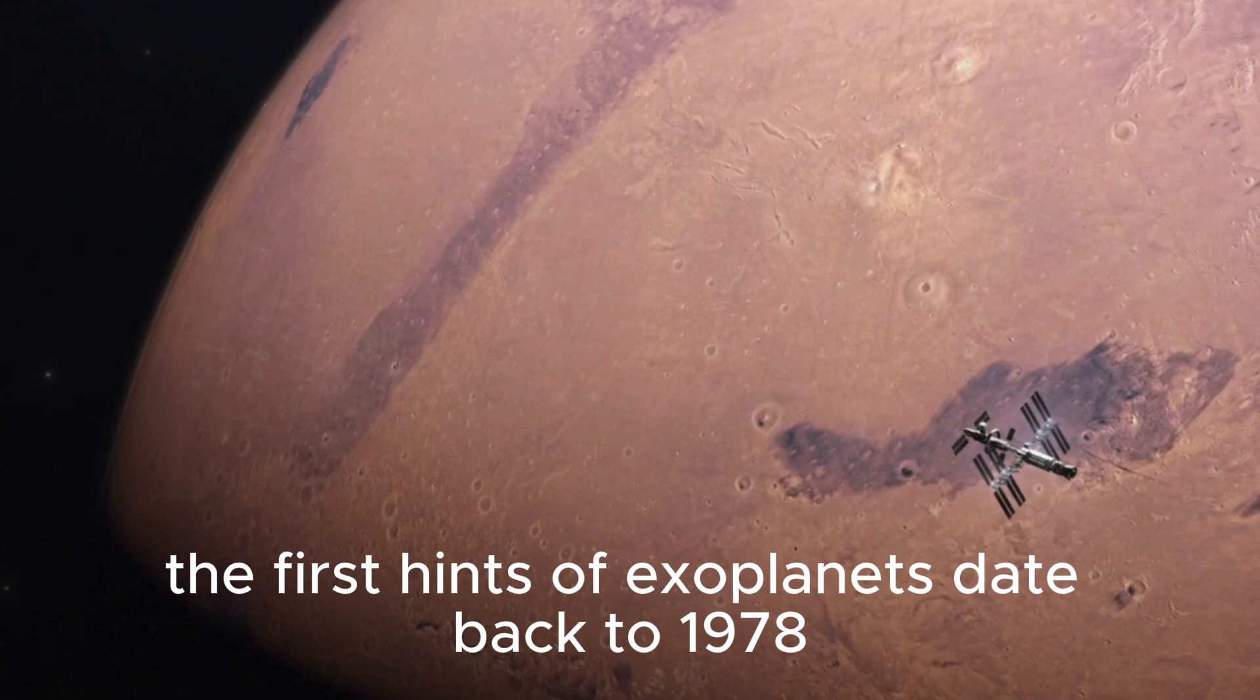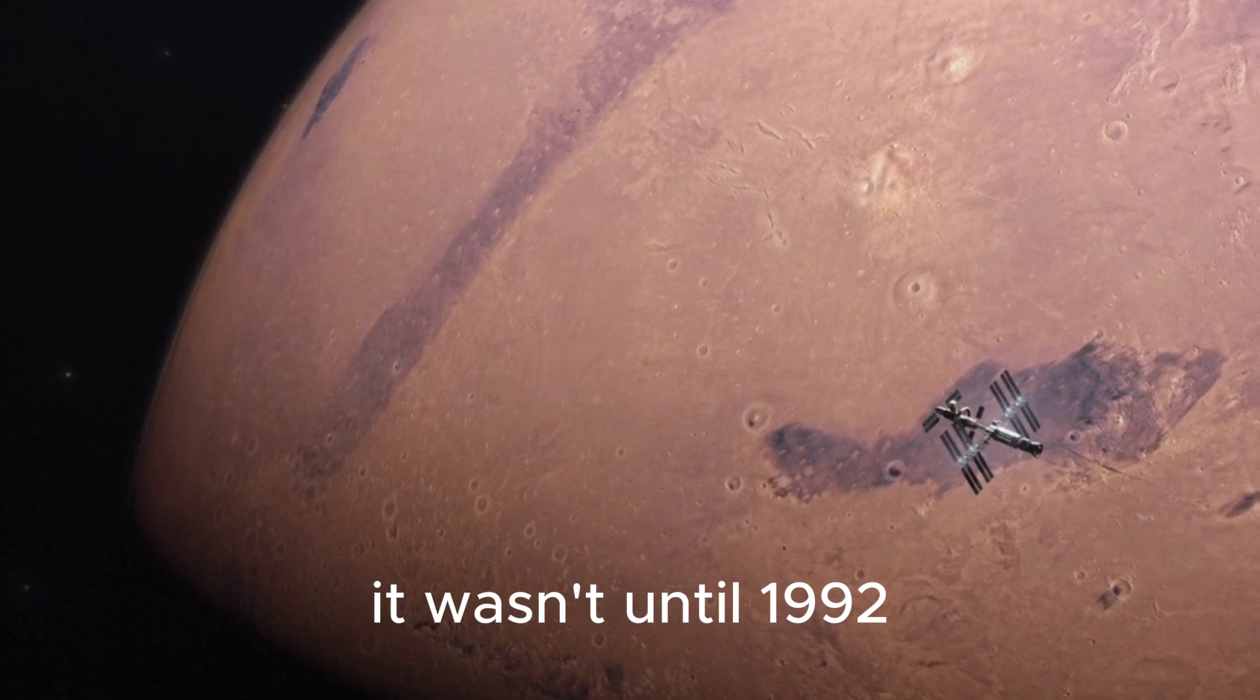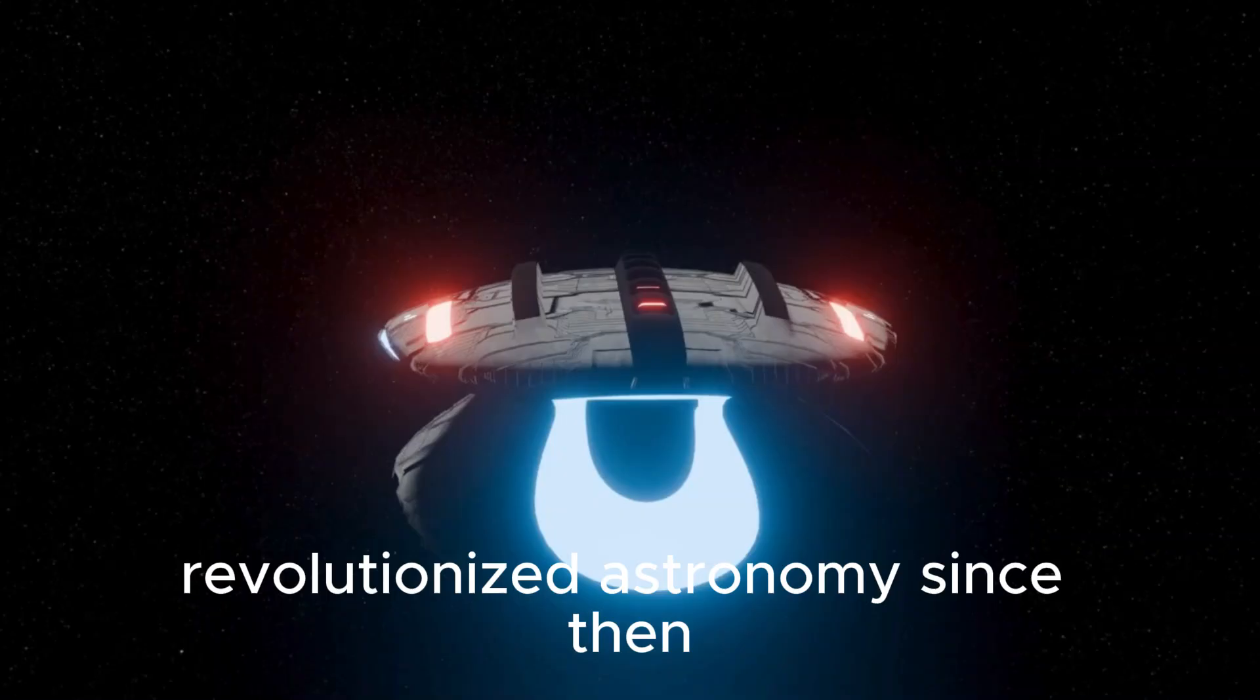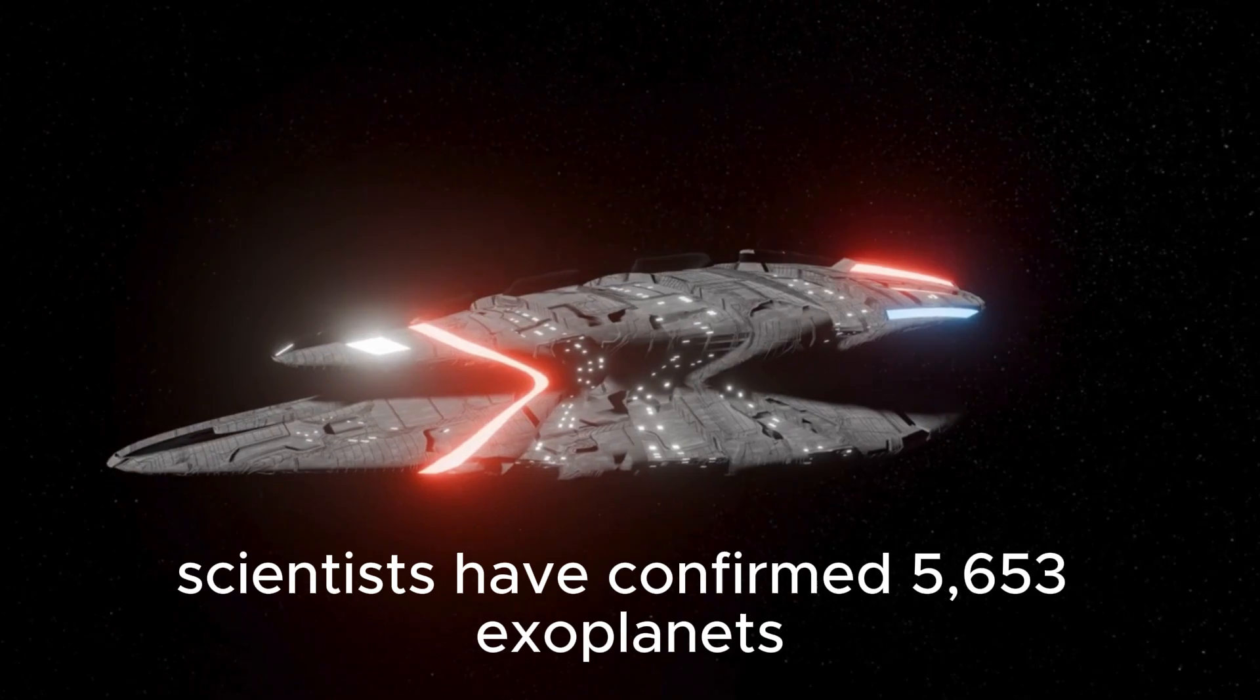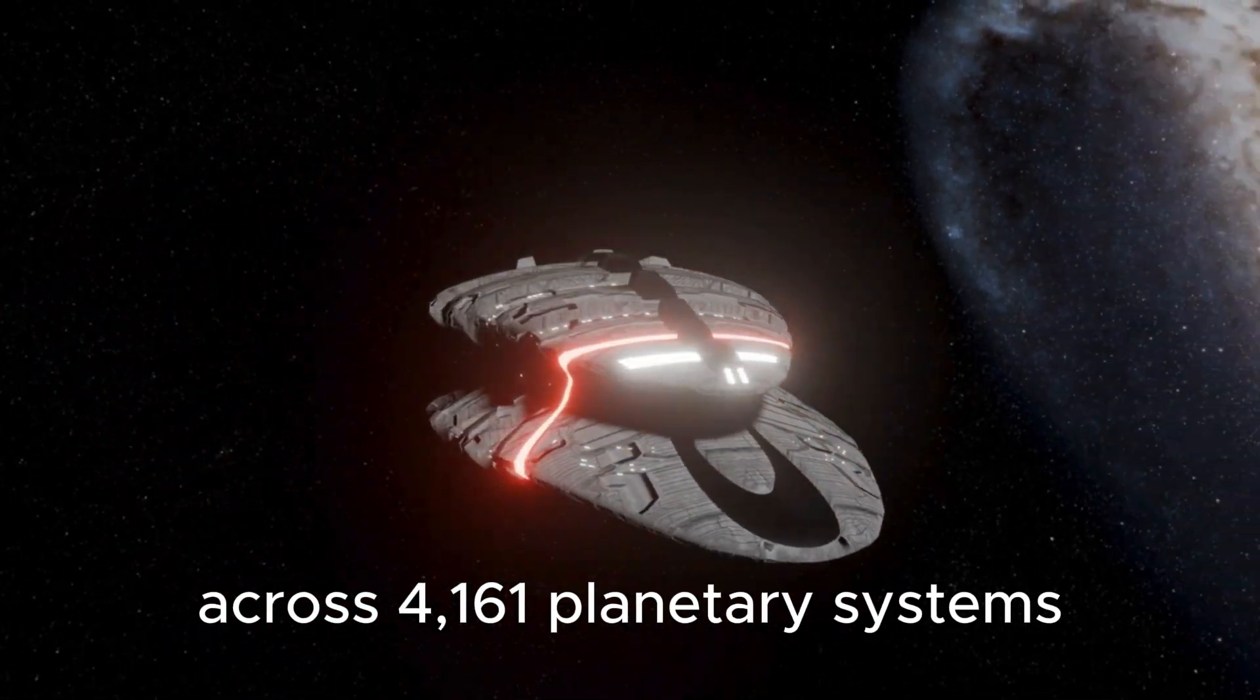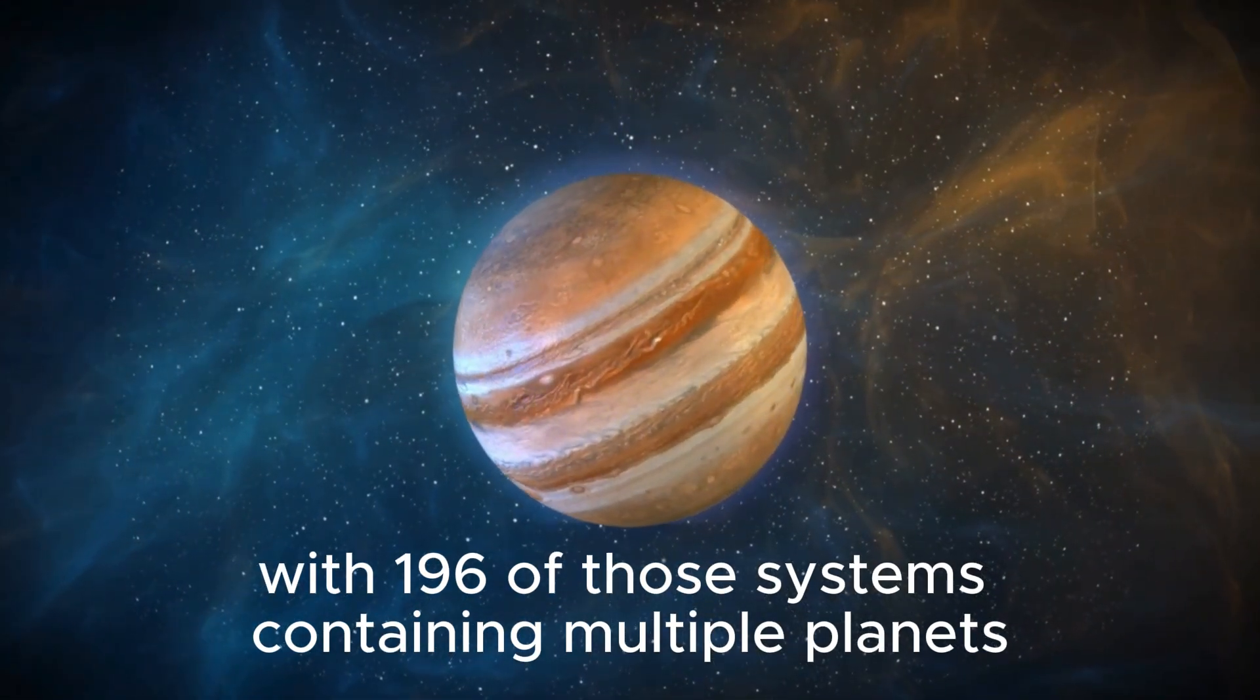The first hints of exoplanets date back to 1978 but were largely ignored by the scientific community. It wasn't until 1992 that the first confirmed exoplanet detection revolutionized astronomy. Since then, discoveries have accelerated. As of April 1, 2024, scientists have confirmed 5,653 exoplanets across 4,161 planetary systems, with 196 of those systems containing multiple planets.